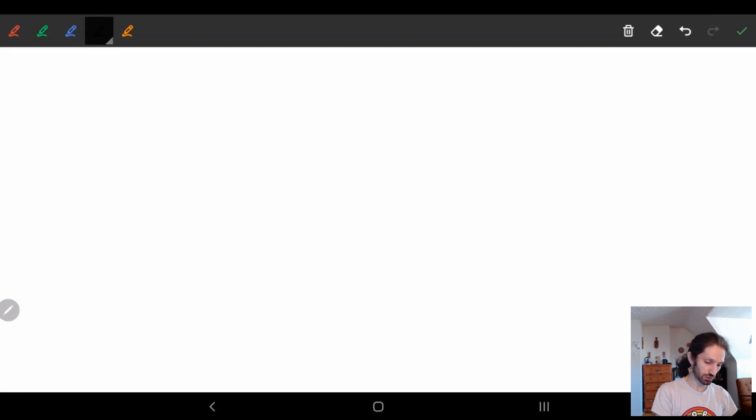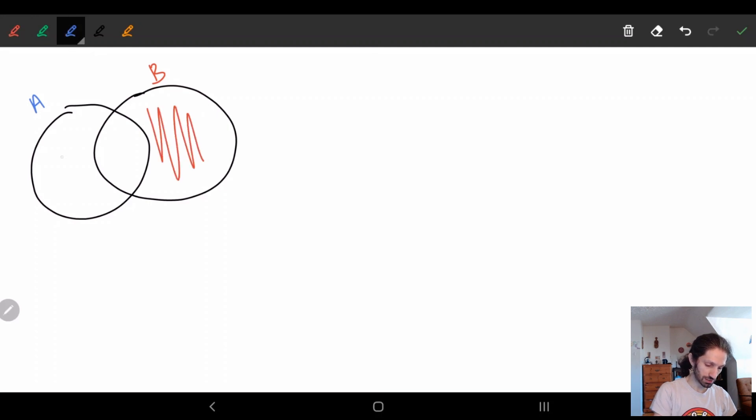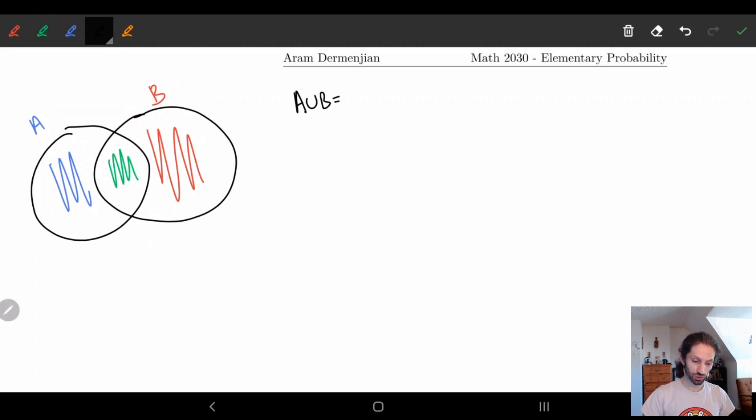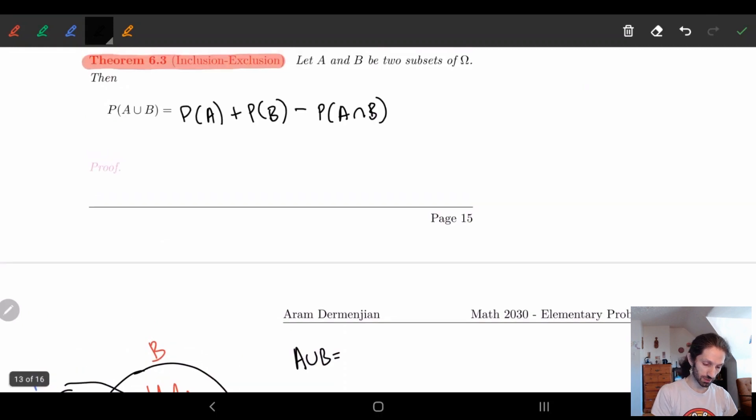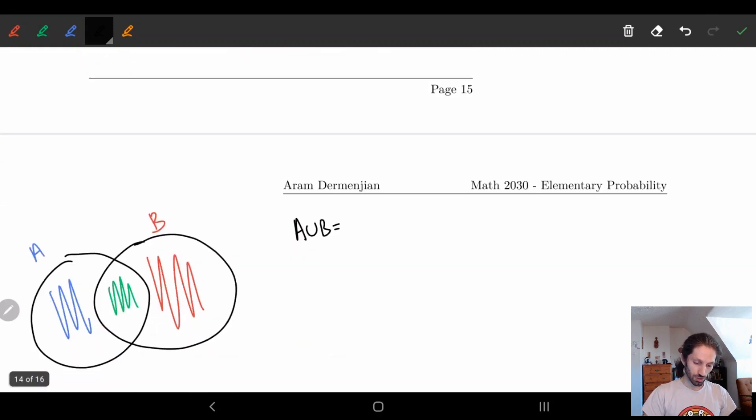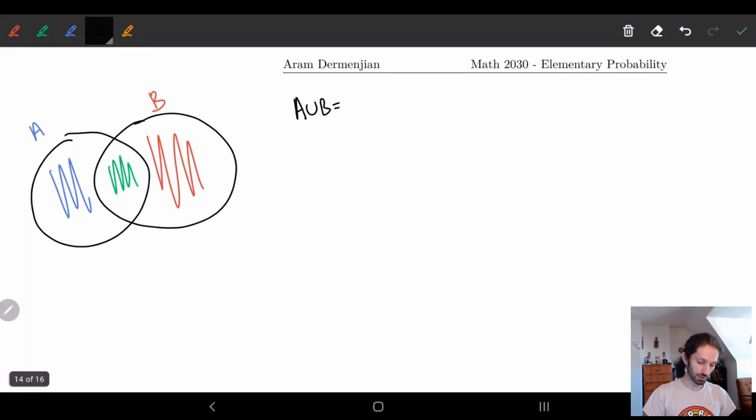So the way we're going to kind of do this is we're going to look at our sets as a Venn diagram. So I'm going to look at this. We're going to look at this. Here's A. Here's B. So we're going to break it up into these three little portions. Partitions. And this will kind of help us look at partitions.